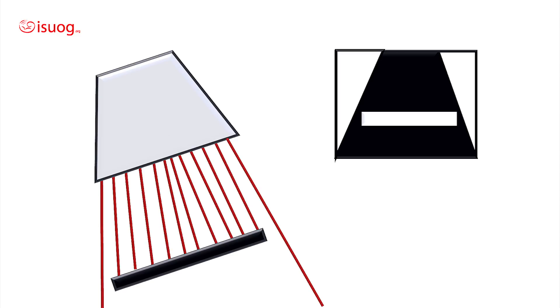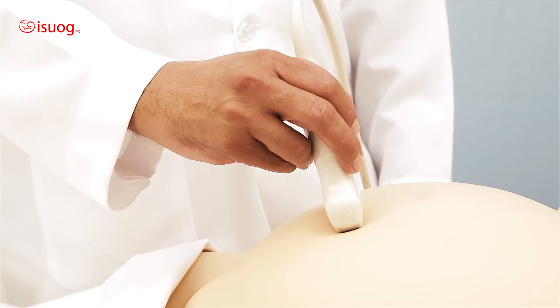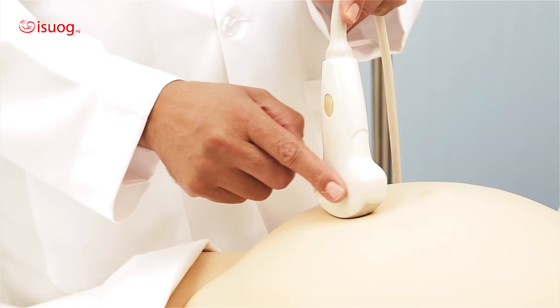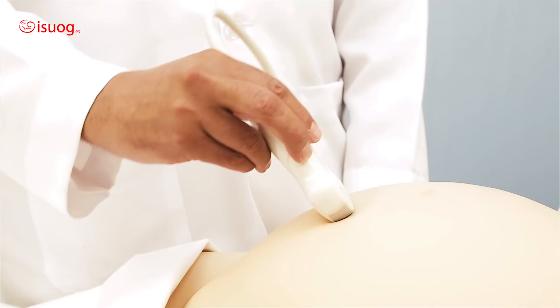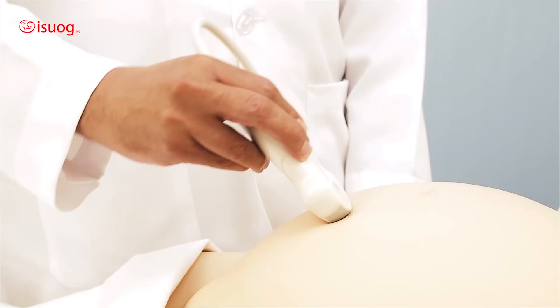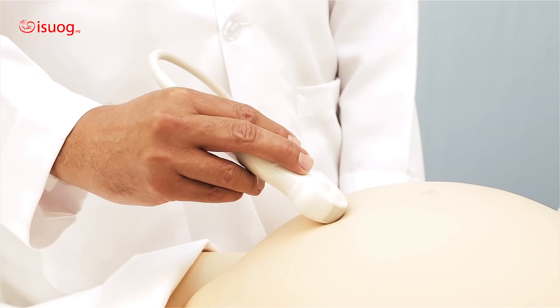The femur is now in a horizontal view and in the center of your screen. The next movement is angling. Angling is used to adjust an oblique view to a transverse view for accurate assessment and measurement of the targeted structure. Angling is leaning on the broad aspect of the probe — you can angle toward the patient's face or in the other direction. And angling is always followed by sliding on the broad axis of the probe.